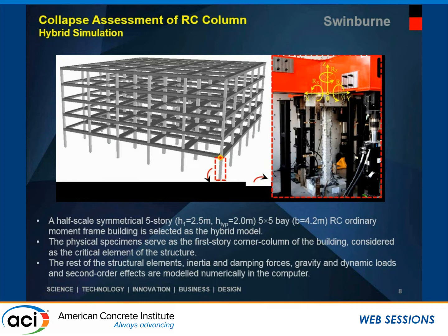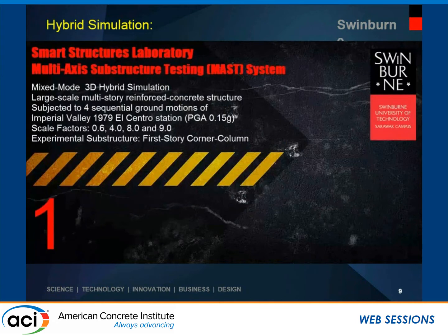This is a half-scale mock-up of a five-storey building. The physical specimen serves as the first-storey corner column, considered the critical element of the structure. The rest of the structural elements — including inertia, damping forces, gravity, dynamic loads, and second-order effects — were modeled numerically in the computer. The following explains in more detail some of the controls used to impose the hybrid loading condition, with scale factors of 0.6, 4, 8, and 9 applied to the ground motions.